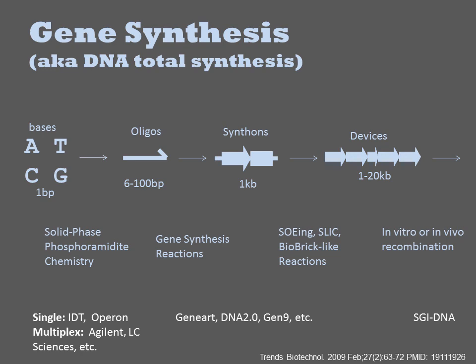Above this scale, in vitro or in vivo recombination methodologies can be used to fabricate DNAs on the genome scale or theoretically longer scales. However, there is only one commercial vendor of these services as of 2014: SGI DNA.